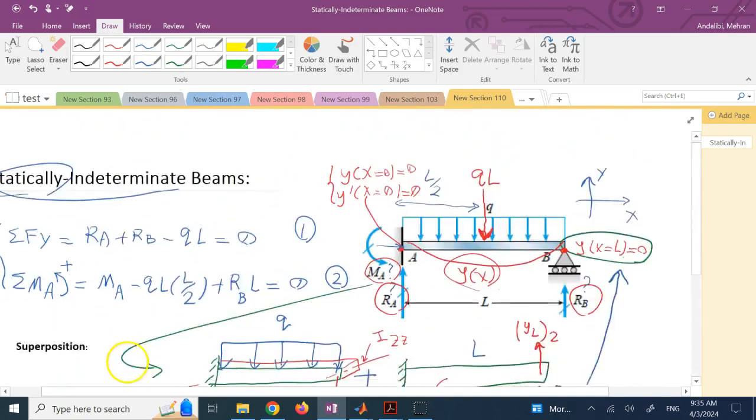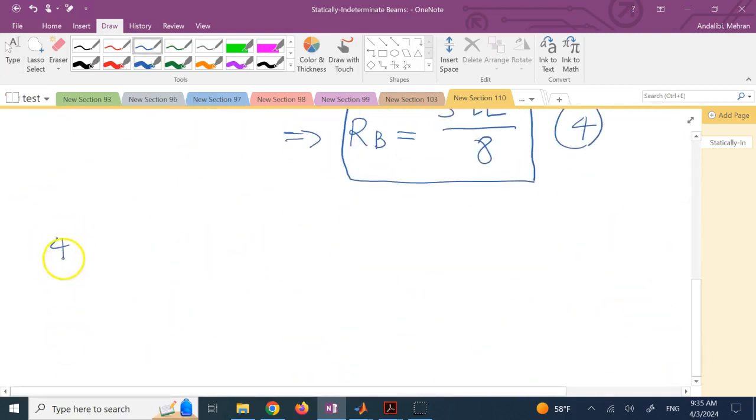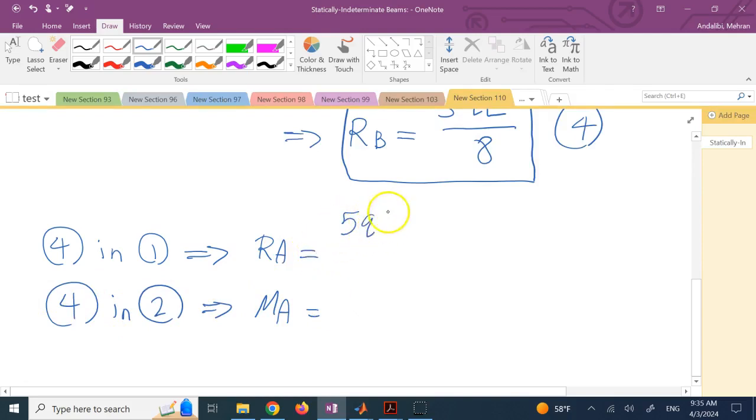Now I'm going to plug this equation 4 back into 1 and 2, because now RB is taken care of, RB is known. So if I plug 4 into 1 and 2, then 1 and 2 only have two unknowns. The first one only has RA, which is good—you directly solve for it. Once you have RB in the second one, the only unknown is MA and you solve for MA. So we plug 4 into 1, that gives us RA, and we plug 4 into 2, that gives us MA. The solutions are 5Q times L over 8 and MA equals QL squared over 8. Done.